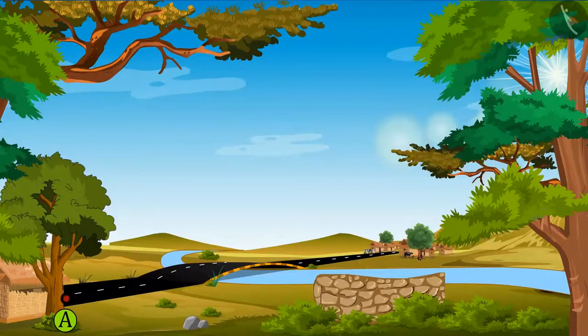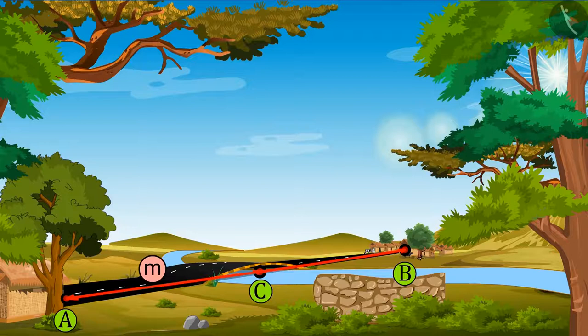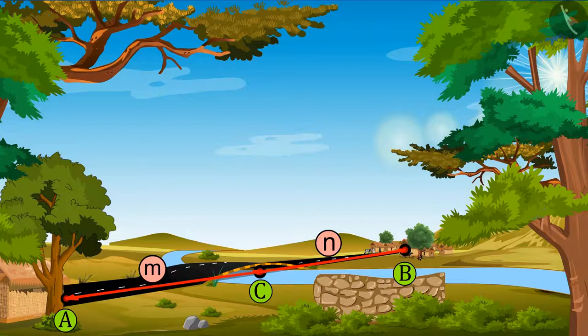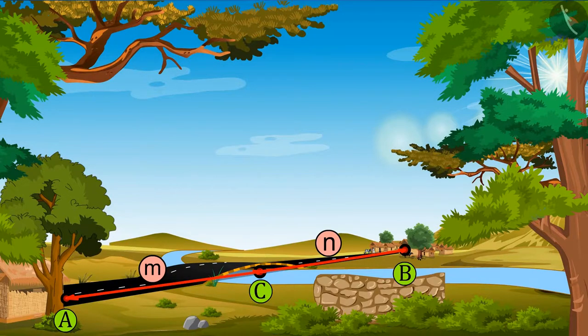Between village A and village B, the government wants to build a bridge at such a location that the ratio of distance from the bridge to village A and village B respectively is M ratio N. Can you tell the coordinates of that point? Come on, let's solve this together.